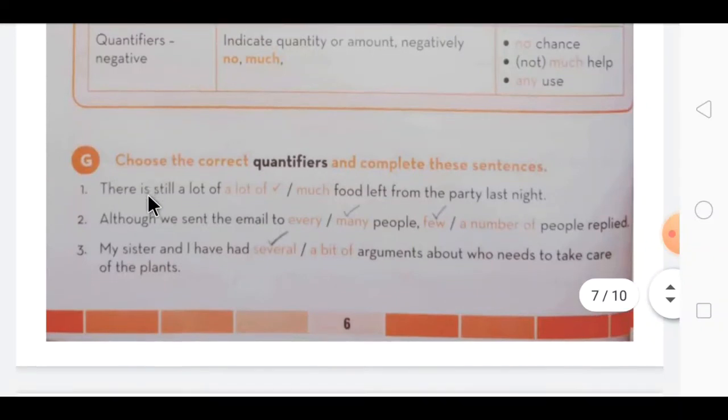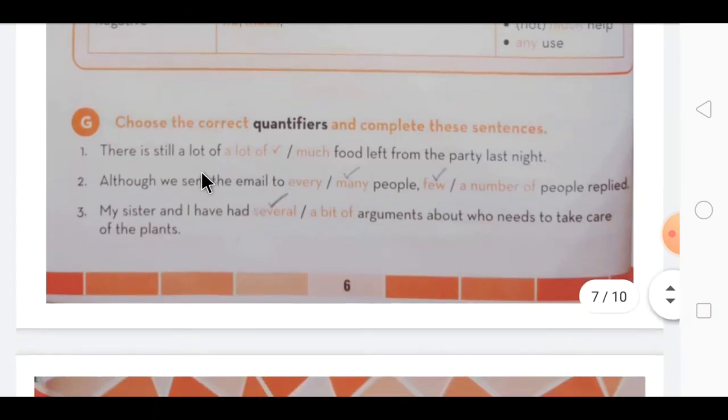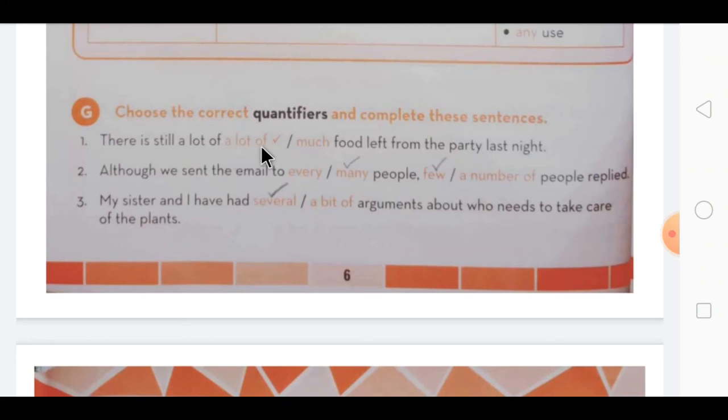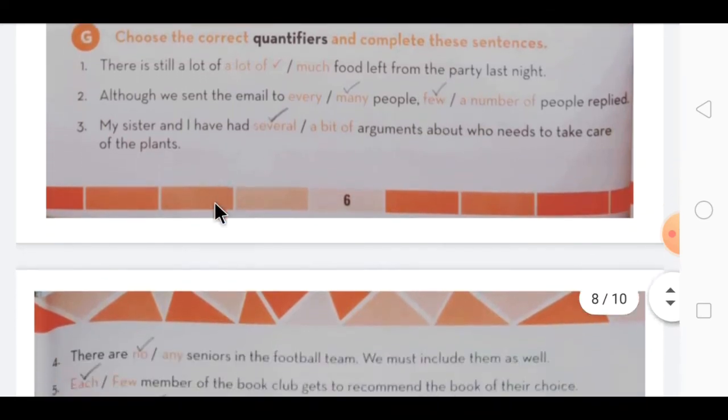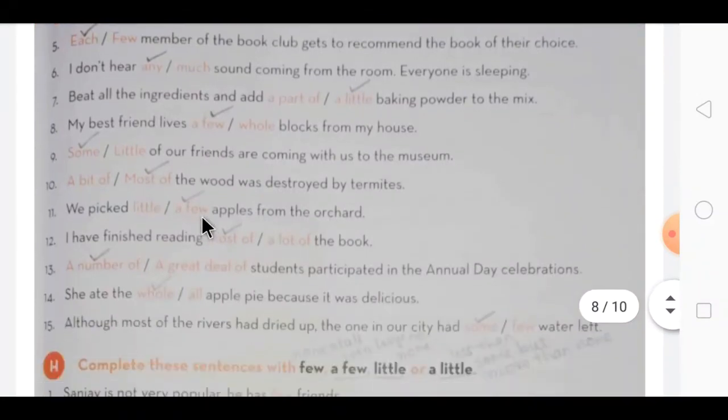In our next exercise G, you have to choose the correct quantifiers and complete this sentence. Here there is still a lot of, a lot of, much food left from the party last night. This one is already been done for you. So you have to tick which quantifier will be used in this. Same way next, although we sent the email to every people we don't say, we say many people. Few or a number of people replied - some people didn't reply, so we take few. So that way you have to tick the word which is suitable quantifier, which is suitable according to the sentence.